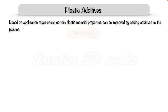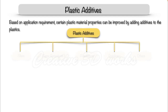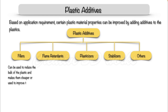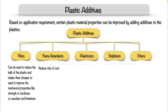Now let's see the plastic additives. Based on application requirements, certain plastic material properties can be improved by adding plastic additives. Plastic additives are divided into different types: fillers, flame retardants, plasticizers, stabilizers, etc. Fillers can be used to reduce the bulk of plastic and make it cheaper, or to improve mechanical properties like strength or hardness — for example, sawdust and limestone. Flame retardants reduce the risk of combustion by creating a chemical reaction which stops the combustion.